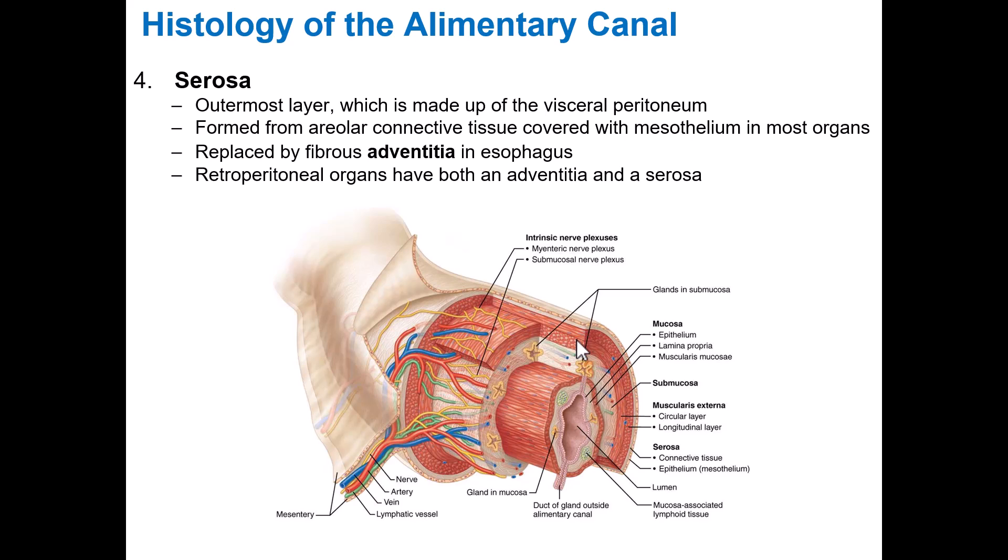And then finally, the most superficial layer is the serosa, made of the visceral peritoneum, which is that connective tissue layer that helps anchor these organs to the rest of the body. In the esophagus, the serosa is called the adventitia because it's a little more fibrous — it needs to be tougher because the esophagus is subject to a lot more friction than some of the other GI tract organs.